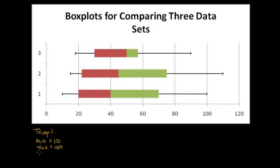We can also see the Q1 for that troop. Q1 starts at the beginning of the box, that's at 20. The median, that's where we have the bar in the middle and visually we see a nice change in color here. So that's at 40.